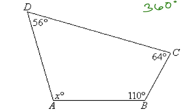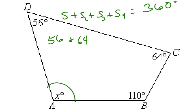So, again, if we add up all the sides together, we can find the missing degrees. Because, of course, side 1 plus side 2 plus side 3 plus side 4 are all going to equal 360 degrees. So, we have 56 plus 64 plus 110 plus x is going to equal 360 degrees.